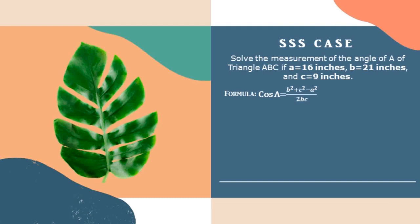First substitute the given to the formula. Cosine A is equal to 21 squared plus 9 squared minus 16 squared over 2 times 21 times 9 is equal to 266 over 378. Divide the two numbers. Cosine A is equal to 0.703703703.